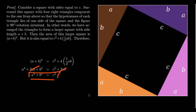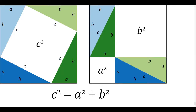Now let me consider a more geometric argument. After all, the Pythagorean equation is named after Pythagoras, who didn't use algebra to prove these things. These images on screen are courtesy of Wikipedia. On the left is the picture we started with: four triangles and a central square whose area is C².